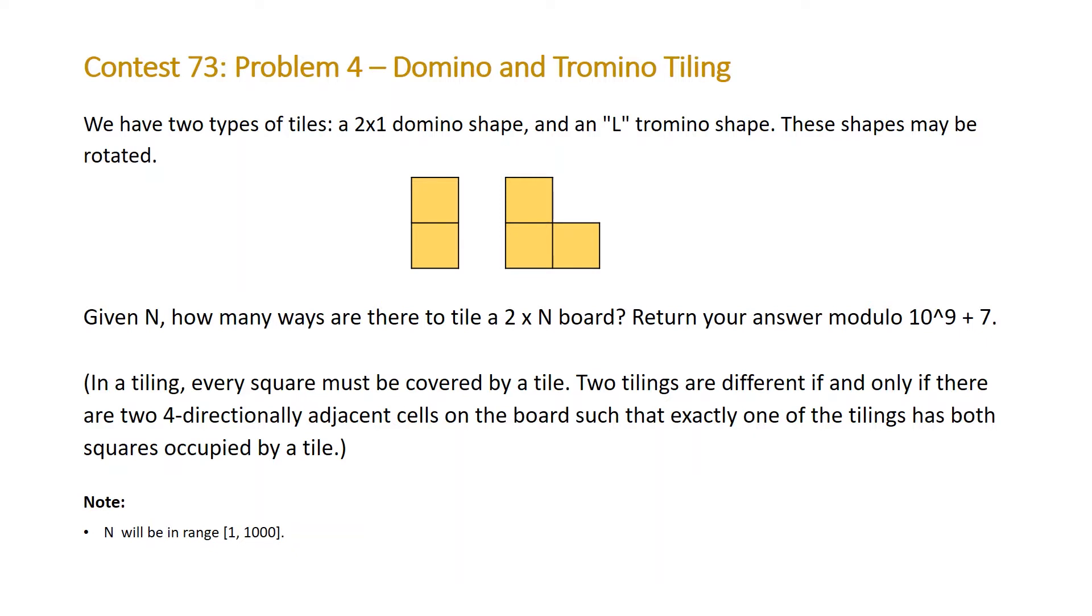The problem states we have two types of tiles: a 2 by 1 domino shape and an L tromino shape. These shapes may be rotated. Given n, how many ways are there to tile a 2 by n board? Return your answer modulo 10 to the power of 9 plus 7.